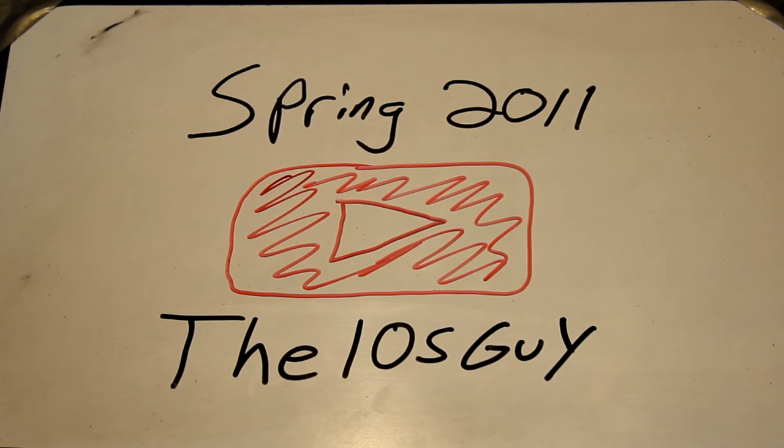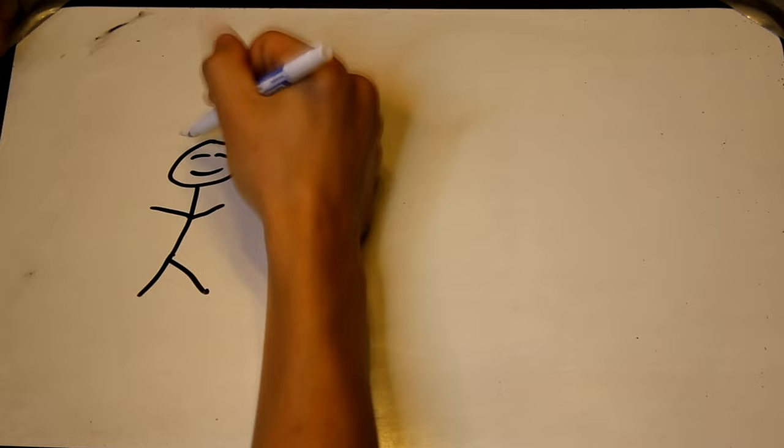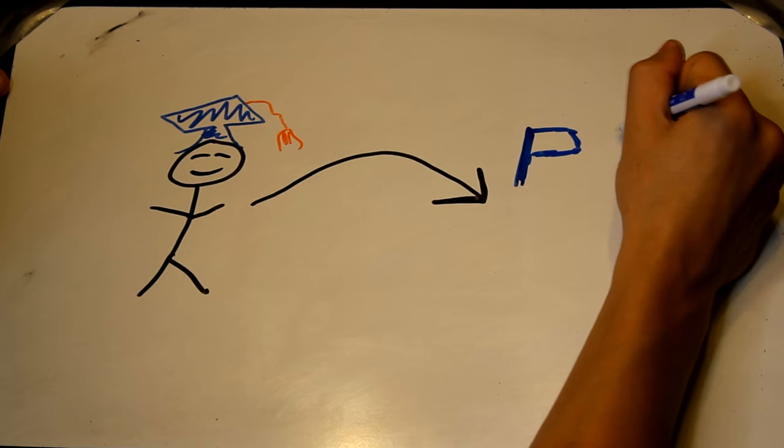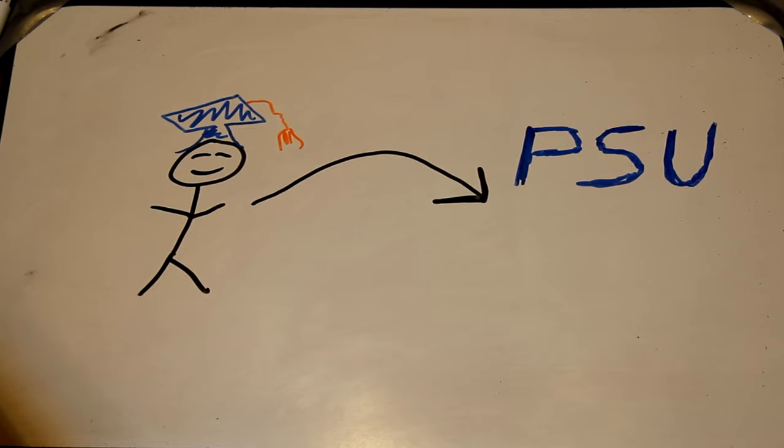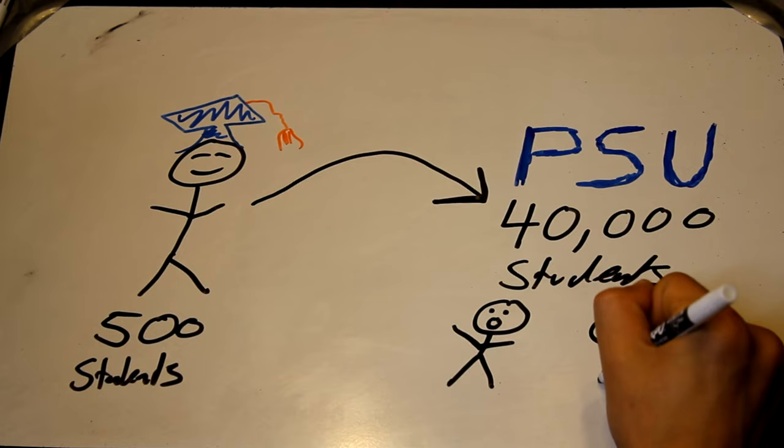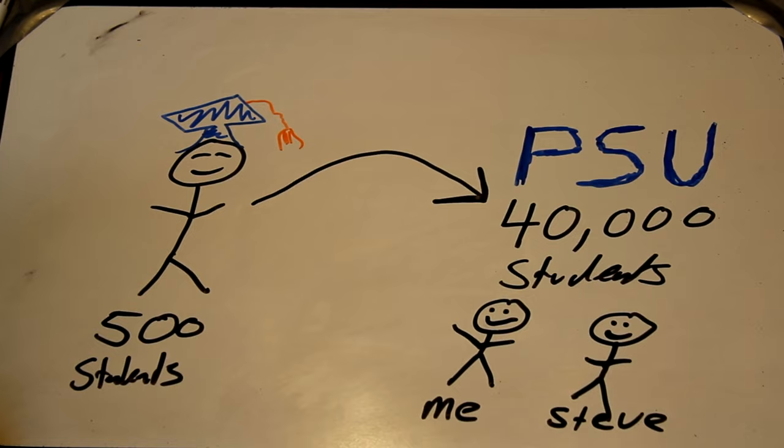After 13 years at the same exact school district with less than 500 kids, in the spring of 2011, I graduated high school. I ended up going to college and attending the Pennsylvania State University, or Penn State, as most people call it. I had always grown up in that same small school district, so arriving on campus freshman year to a school with over 40,000 students, it was quite intimidating. Luckily for me, my best buddy Steve, who many of you guys met in my Austin, Texas travel blog, also came to Penn State too, and that helped settle my nerves a little bit.